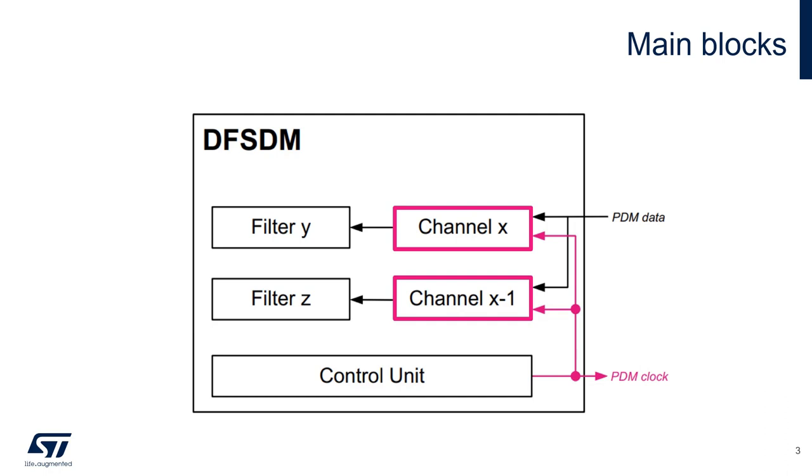Two channels can be internally connected to the same PDM line. In this way, it's possible to configure them to acquire data on both edges of the clock by using one channel to acquire the rising edge and the other to acquire on the falling edge.